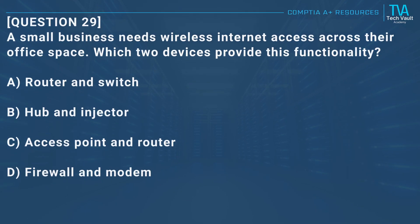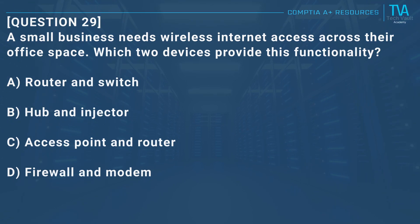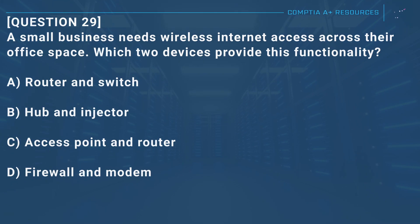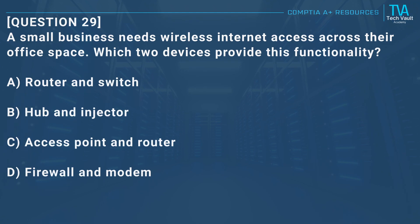Question 29: A small business needs wireless internet access across their office space. Which two devices provide this functionality? A, router and switch. B, hub and injector. C, access point and router. D, firewall and modem.